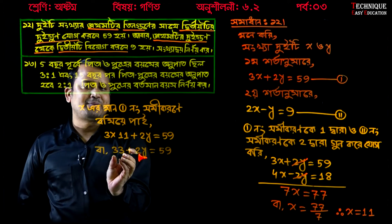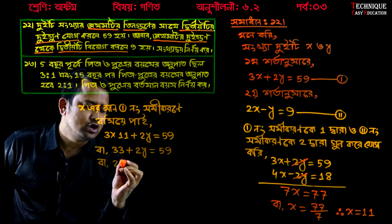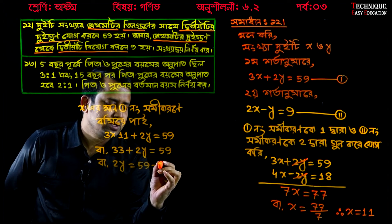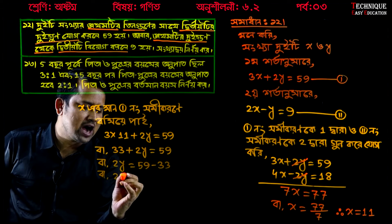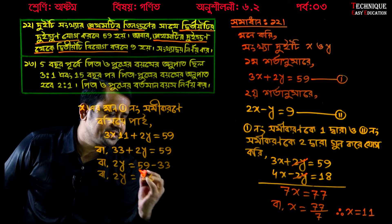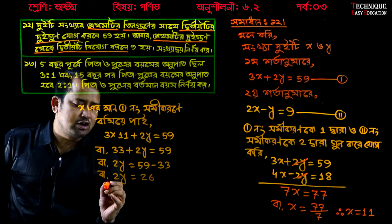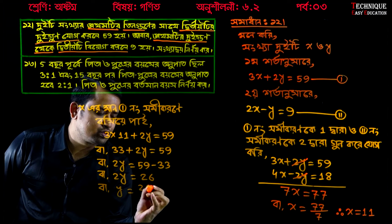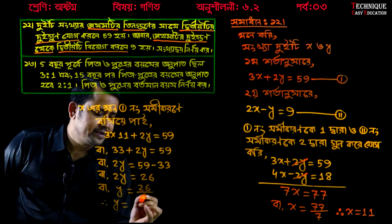Now look — 33 plus, joining both sides, minus comes: 2y equals 59 minus 33. So 2y equals 59. Look, y minus 33, subtract, subtract, gives 26. So 2y equals 26. Divide both sides, divide by 2: y equals 13.